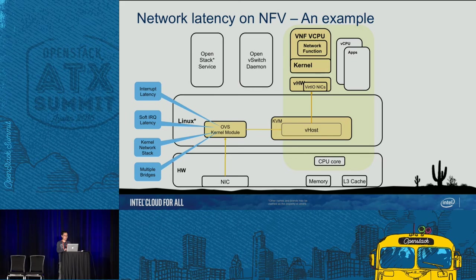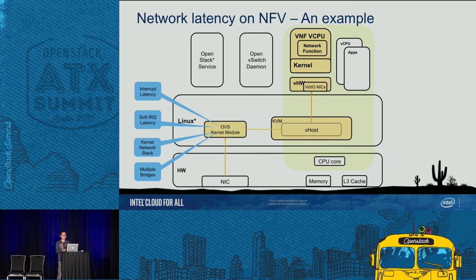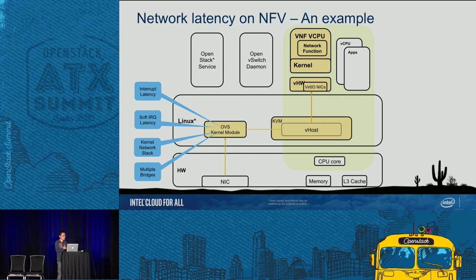The fourth source of latency is that in a generic OpenStack environment, multiple bridges are created to handle packet forwarding — mostly for security purposes. For example, in a generic Neutron environment there is an integration bridge and a physical bridge. Packets have to be copied between these different bridges, adding another layer of latency. After all this, the packet is received and handled by the OVS kernel module and then sent to KVM and the VHOST.